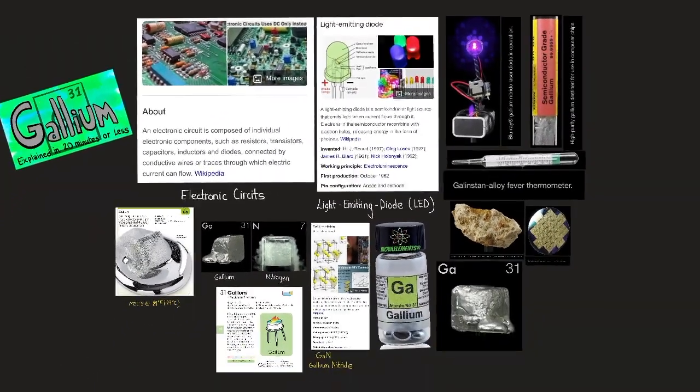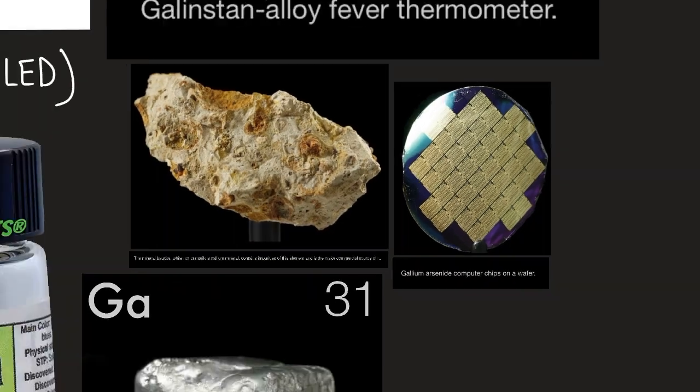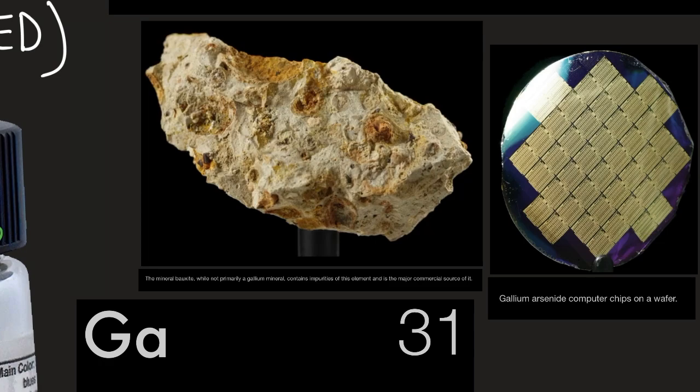So continuing on, here we have some information on gallium. Gallium arsenide computer chips on a wafer, similar to silicon. Here we have the mineral bauxite, while not primarily a gallium mineral, contains impurities of this element and is the major commercial source of it.